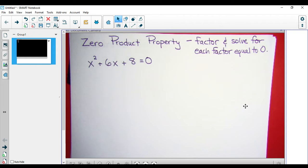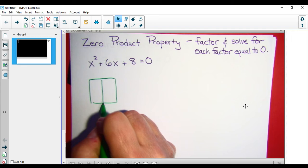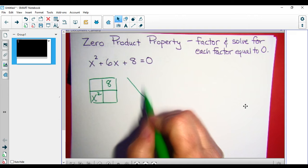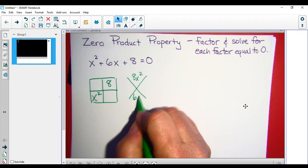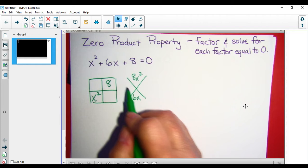If I look at this problem and I try to factor it, if I have x squared and 8, I use my diamond problem, 8x squared and 6x. Factors of 8x squared that give me 6x are 2x and 4x. That works.